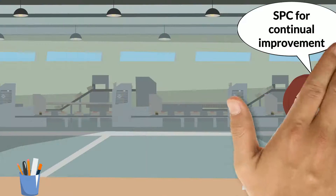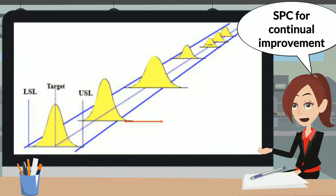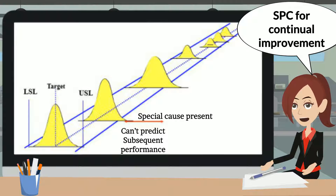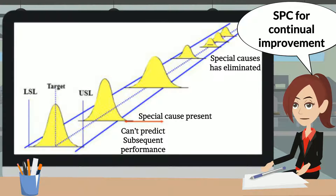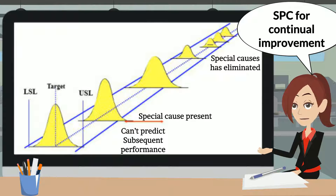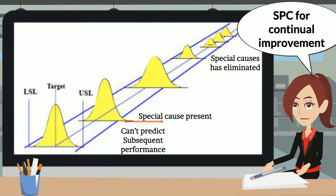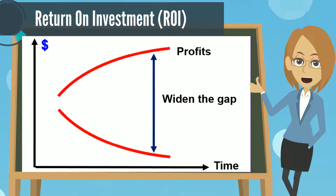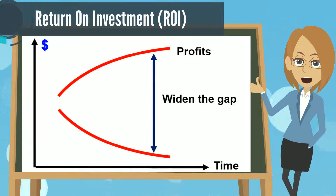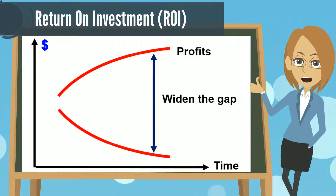In the long run, proper implementation of SPC enables the company to achieve significant improvement in both process and quality. Effective SPC implementation will help your company to reduce operation costs, increase business profitability, and widen the competitive gap.